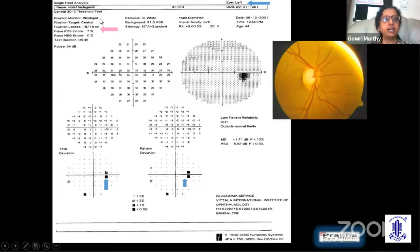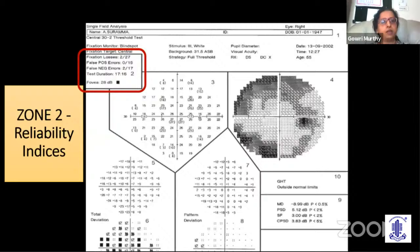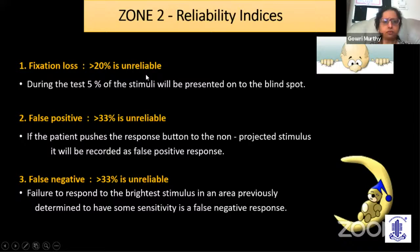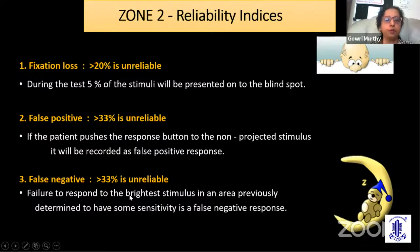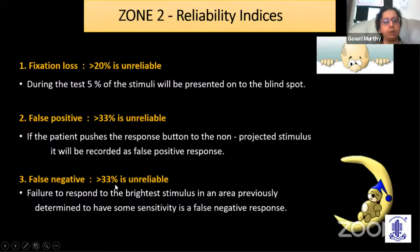The reliability indices box shows fixation losses, false positives, and false negatives. More than 20% fixation losses is generally unreliable — this is tested by presenting the stimulus on the blind spot. False positives occur when the patient pushes the response button even when no stimulus is projected, or in a periodic fashion. Greater than 33% is marked as unreliable. If the patient has lost attention or fallen asleep and does not respond even to the brightest stimulus, this is captured as a false negative — more than 33% is again unreliable.